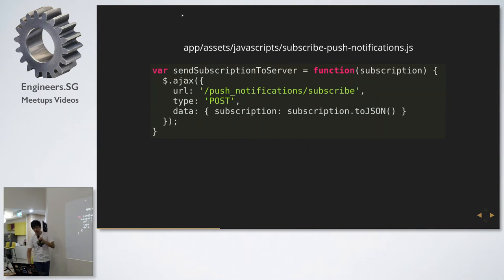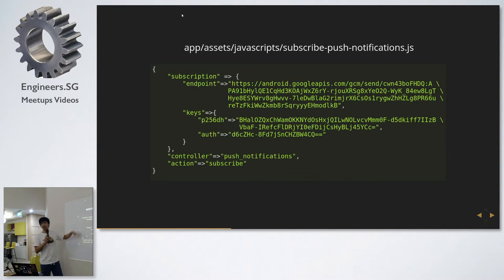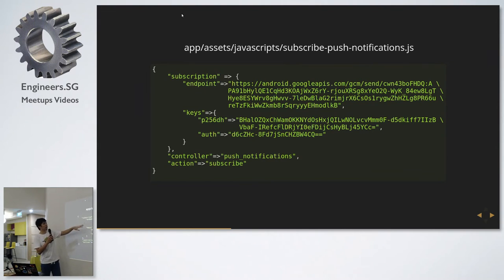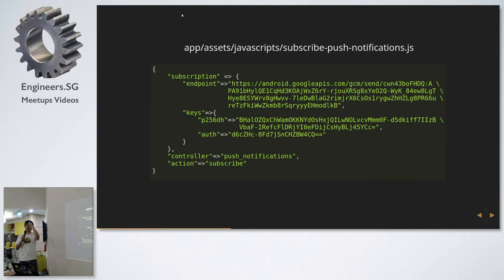What's interesting is what is in the subscription object itself. The first thing is there's an endpoint — different browsers return different endpoints. For Google, it returns fcm.googleapis.com/gcm/send for Google Cloud Messaging, and then you get an entire chunk which is a subscription ID. This ID is unique to your browser, and is your unique identifier for each client's browser.